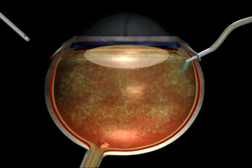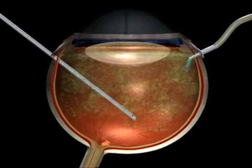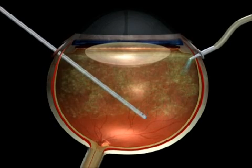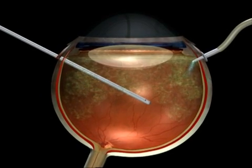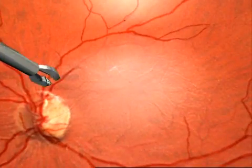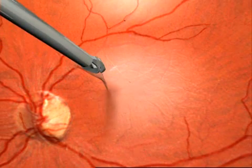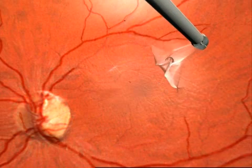The goal of the operation is to stop the vision loss, or even potentially obtain a slight improvement. In the majority of cases, the surgeon will first do a vitrectomy — that is the removal of the vitreous body with the help of a vitreotome, replacing it with an appropriate liquid. He will then remove the posterior hyaloid, the envelope of the vitreous body, which is often stuck to the retina.